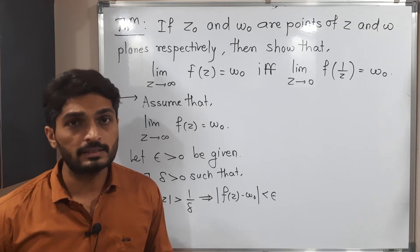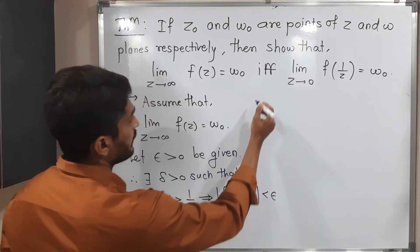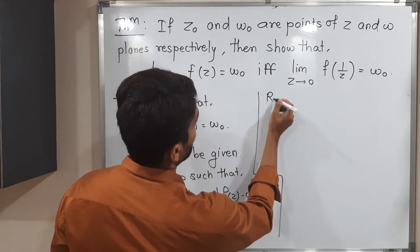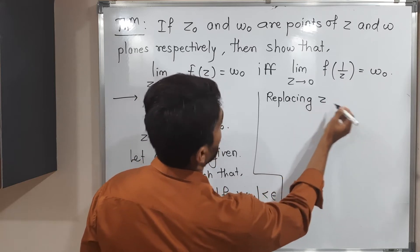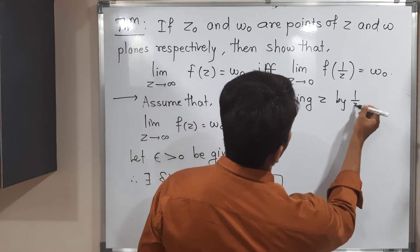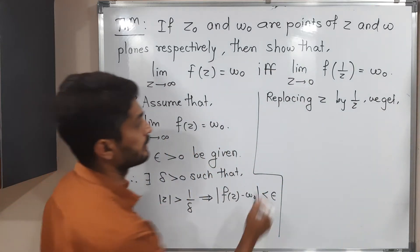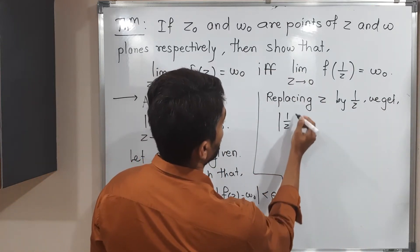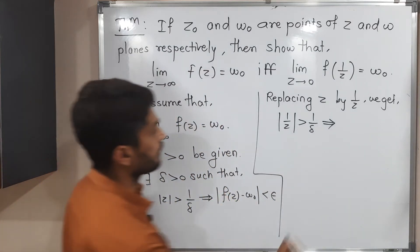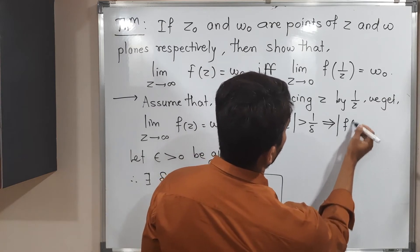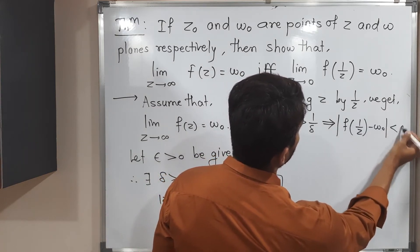Now I am going to replace z by 1/z. Replacing z by 1/z, we get: mod(1/z) greater than 1/delta implies mod f(1/z) minus w₀ less than epsilon.